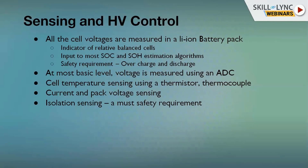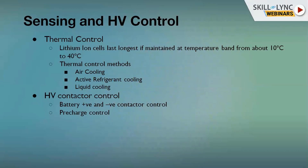The fourth sensing element is isolation sensing, which is a very critical safety requirement for high voltage battery packs. This senses the leakage current between the chassis of the vehicle and the battery pack. Any leakage current beyond the acceptable limit is sent to the BMS and necessary actions are taken to mitigate any safety hazards. There is also thermal control as part of HV control — lithium-ion cells last longest when maintained in a temperature band from 10°C to 40°C.